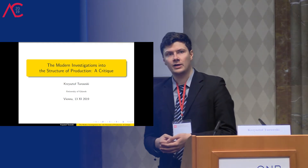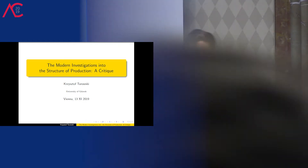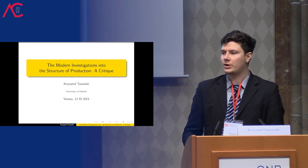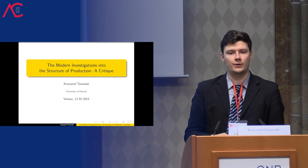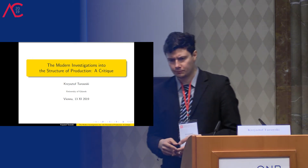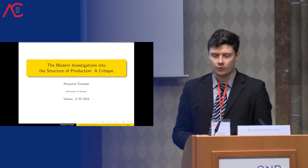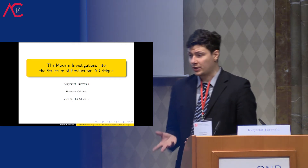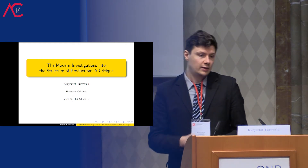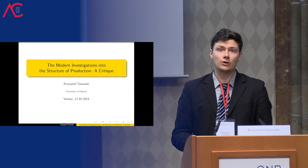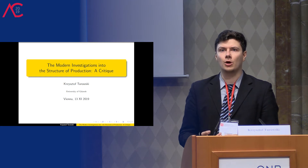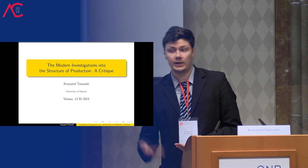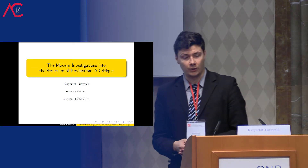The Hayek triangles are probably best known from Garrison's presentation, in which he put together a few things, such as the production possibilities frontier curve, the Hayek triangles, and the demand and supply for loanable funds. This depiction is very useful for didactic purposes — it explains to the layman what Austrian economics is about. It is also very useful when we try to compare the Austrian approach to, for example, Keynesian and monetarist approaches, and Garrison's 'Time and Money' is a perfect example of this.